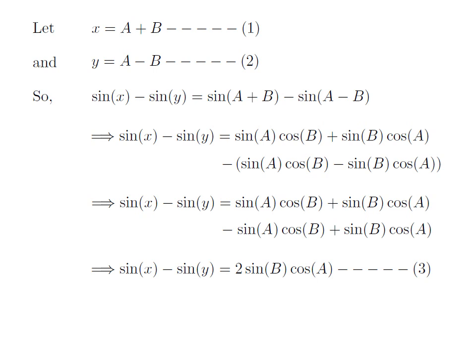Adding and subtracting the common terms in the above expression, we got sin of x minus sin of y is equal to 2 times sin of B into cosine of A. Let us give number to this expression, 3.